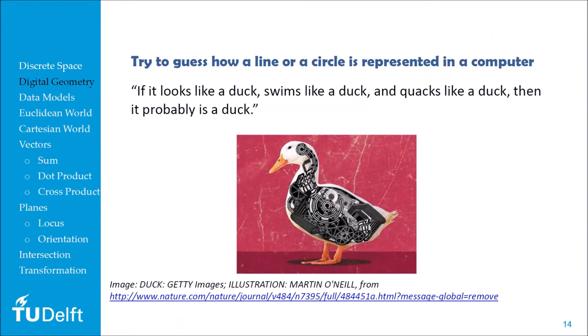Think about how a line is represented in a computer. In computer science we say: if it looks like a duck, swims like a duck, and quacks like a duck, then it's probably a duck. What does it take to represent a line in a digital computer? Two points give us the basis to define the line. But what makes the line sound like a line, work like a line? Properties like thickness, color, direction — a vector that defines its direction.